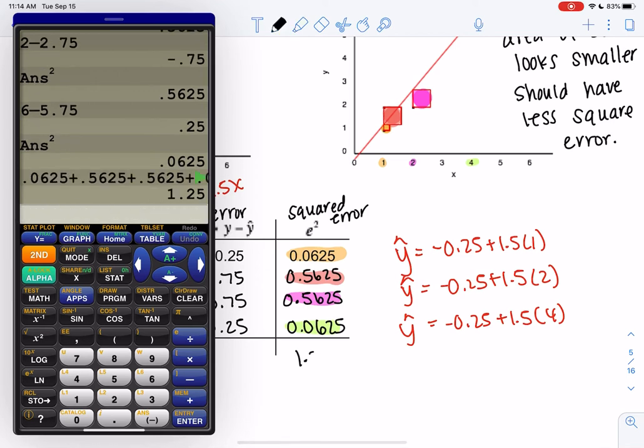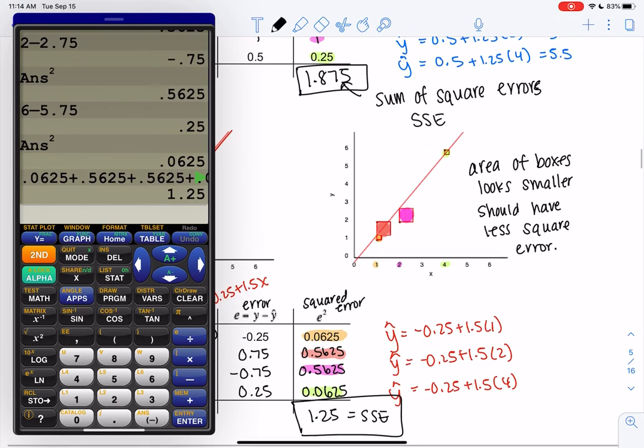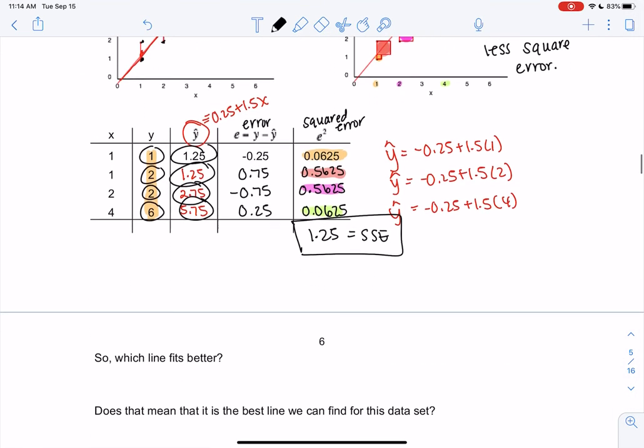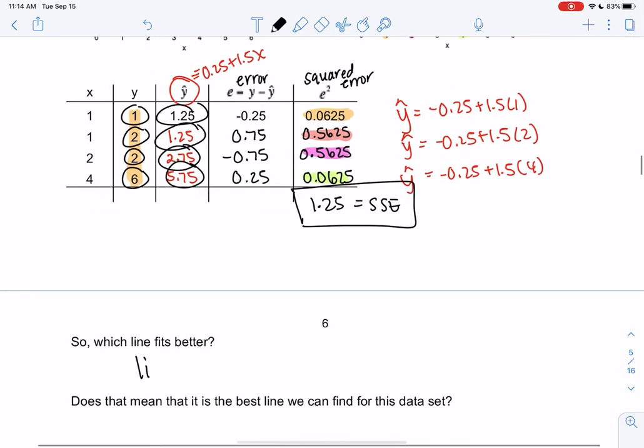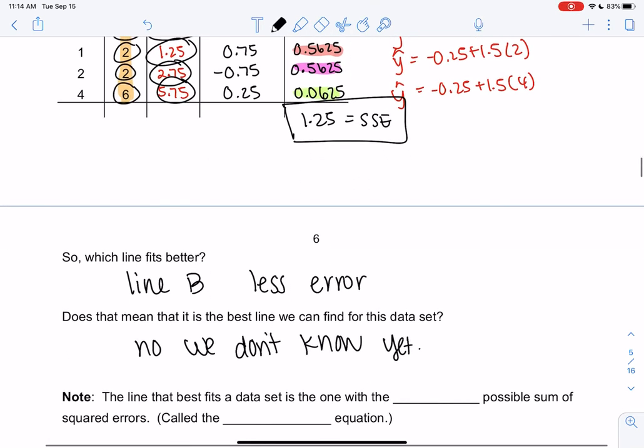1.25 is the SSE, sum of square error. So I don't know what 1.25 means, but I know it's better than 1.875. So which line fits better? Line B because it has less error. Does that mean it's the best possible line? No, we've only looked at two lines. There's like so many lines. We don't know yet.